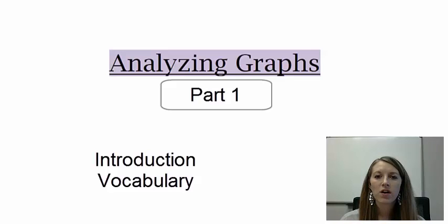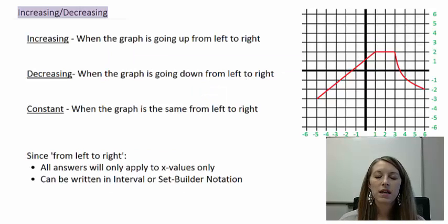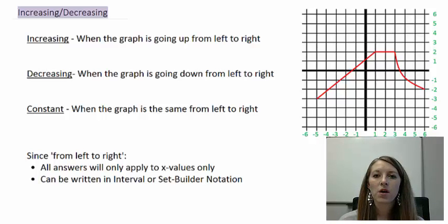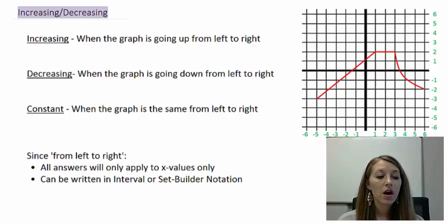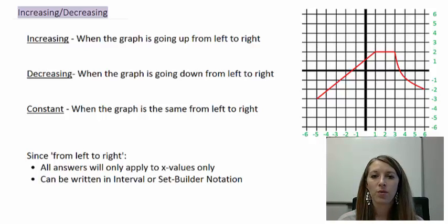Not just degree 2 functions, but any type of function that we can think of. The first thing we need to discuss is increasing, decreasing, and constant. Increasing is when our graph is going up from left to right. Decreasing is when our graph is going down from left to right. And constant is when the graph stays the same from left to right.